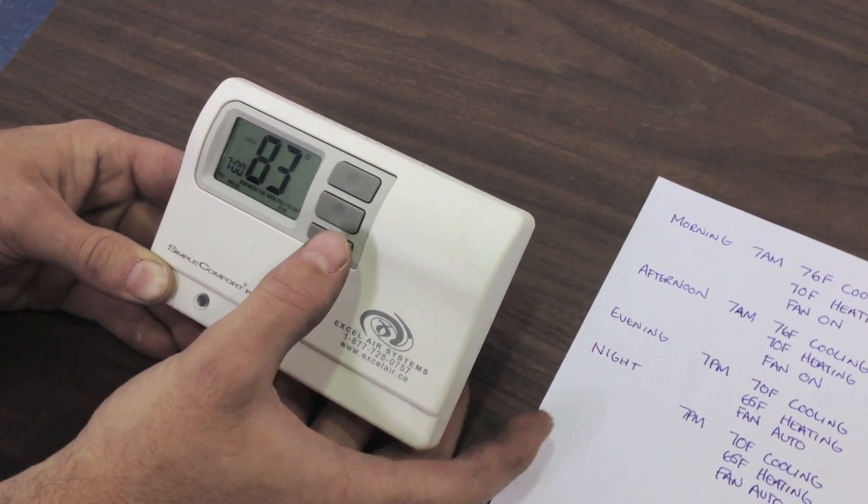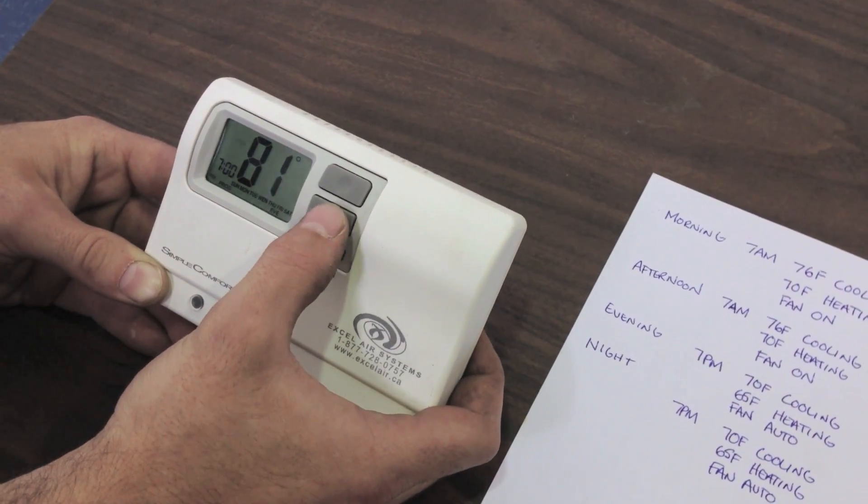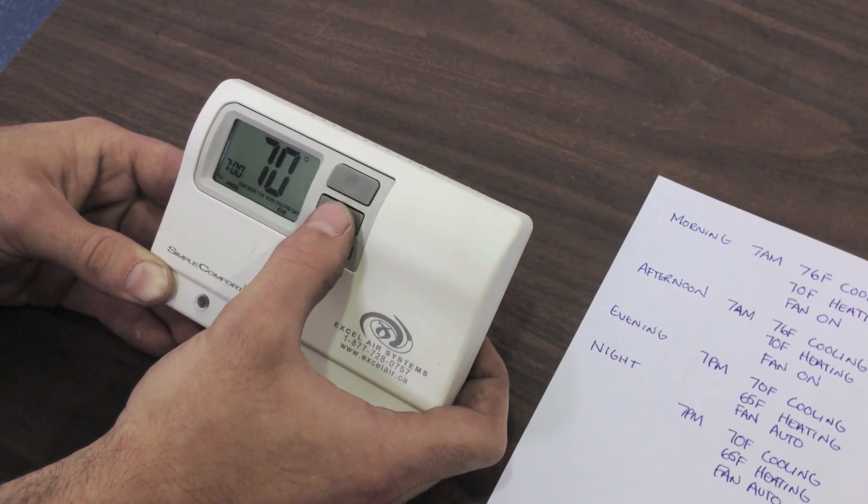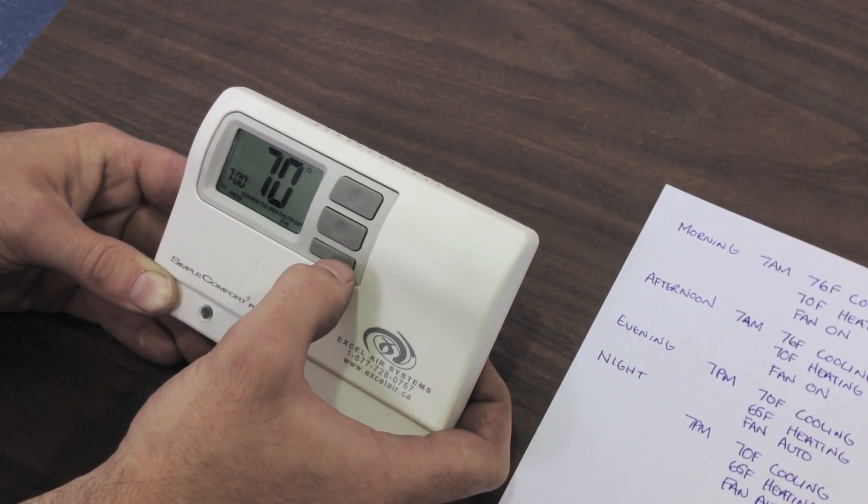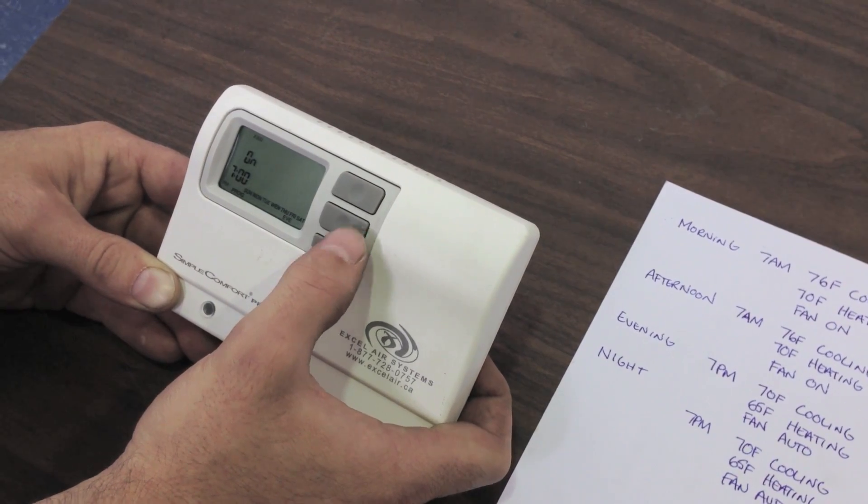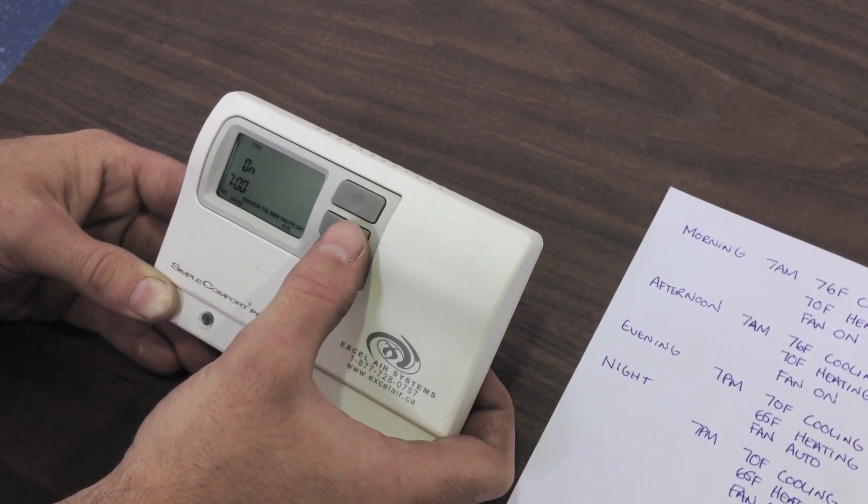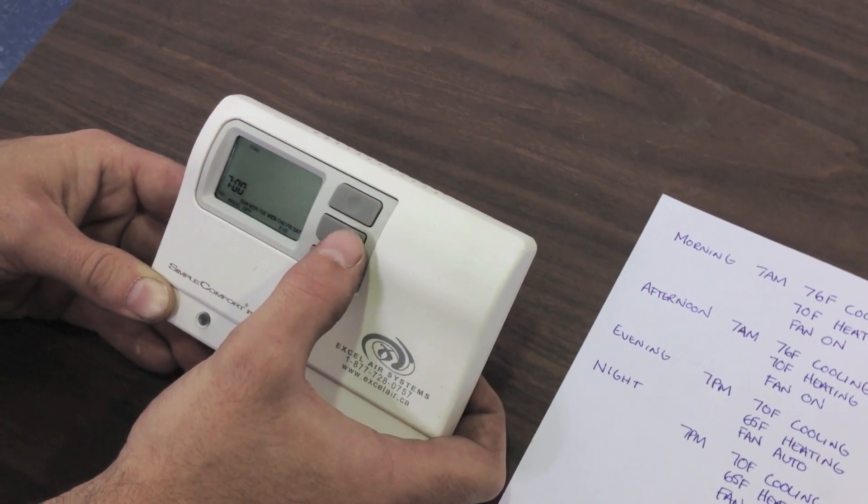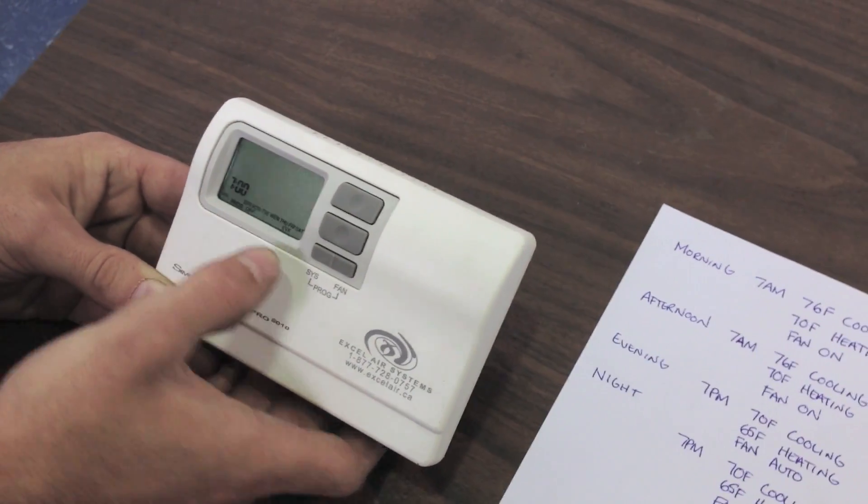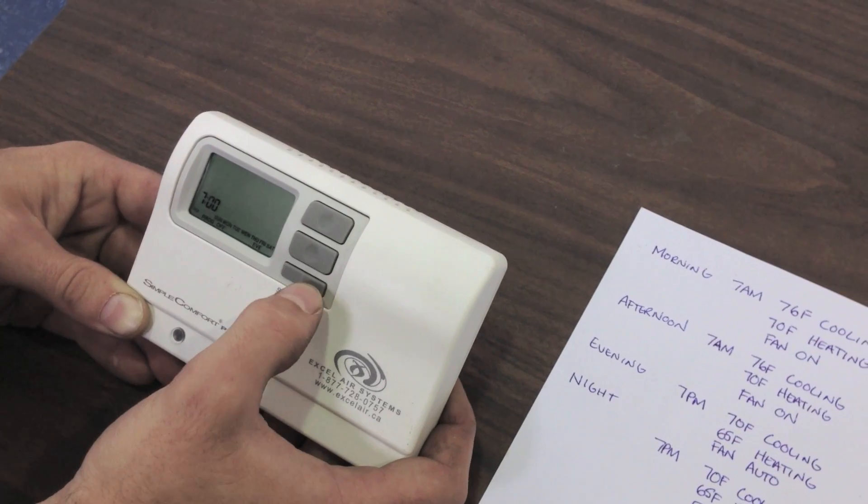Then we have our cool set point, which we want down to 70 degrees. We're going to push the down arrow, get to 70. And then when we're happy, we push fan. And now for our off cycle, we want our fan to turn off when the cooling or heating turns off. So we're going to push our down arrow so the little tiny word off disappears. When we're happy, we push our fan button.